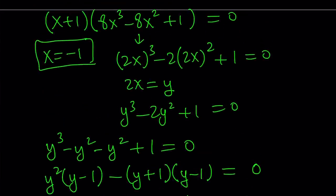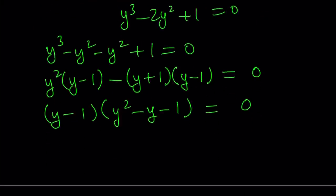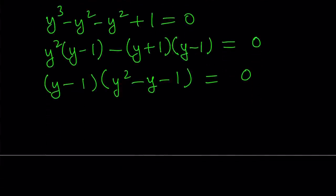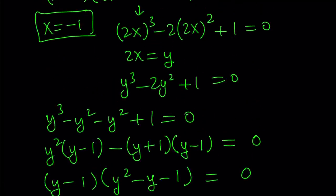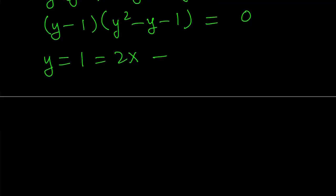So we got one solution from (x+1), then solved the cubic and got two factors: one linear (y=1) and one quadratic. From y equals 1, since y equals 2x, we get x equals 1/2, which is another solution in addition to x equals negative 1.